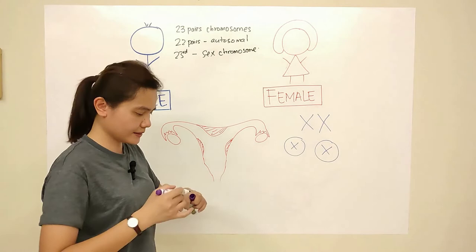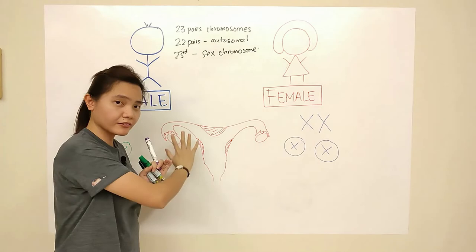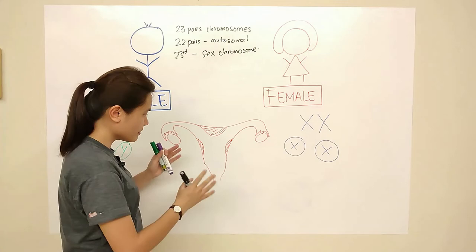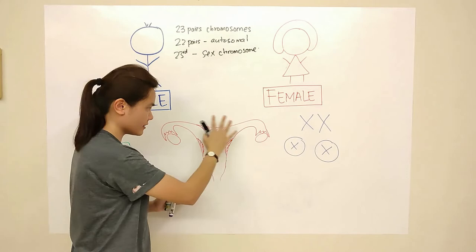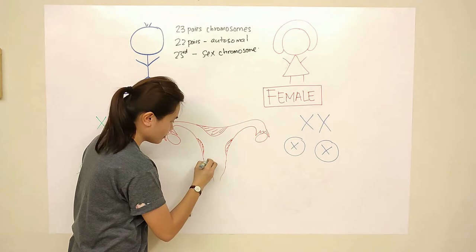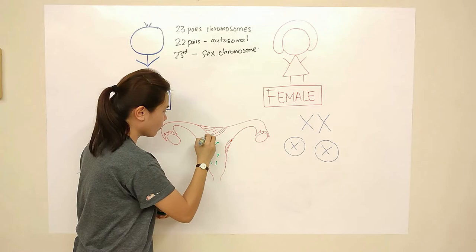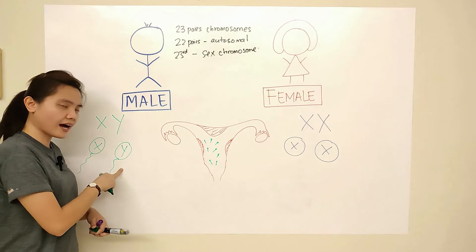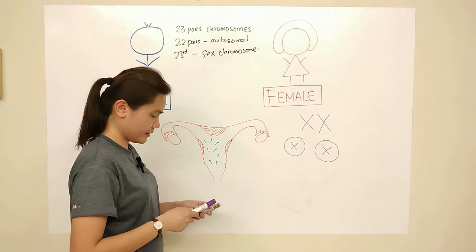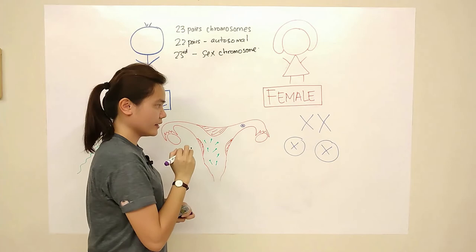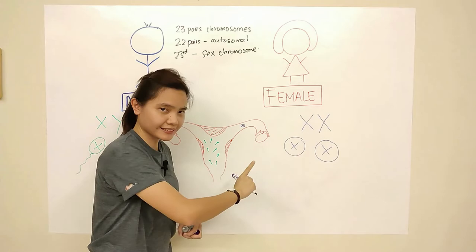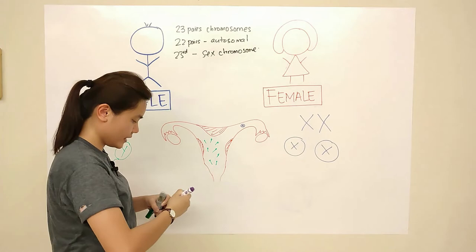Here is the female reproductive organ. At the time of conception, sperms are present in the uterus — millions of sperm are here looking for one egg cell. As I said, half of the million could be X and the other half Y. The egg always carries X. So the sperm could be X or Y.